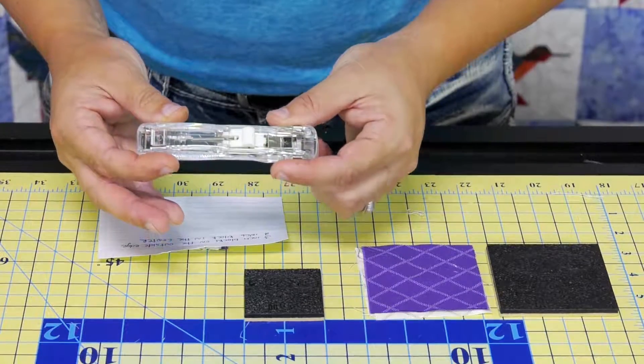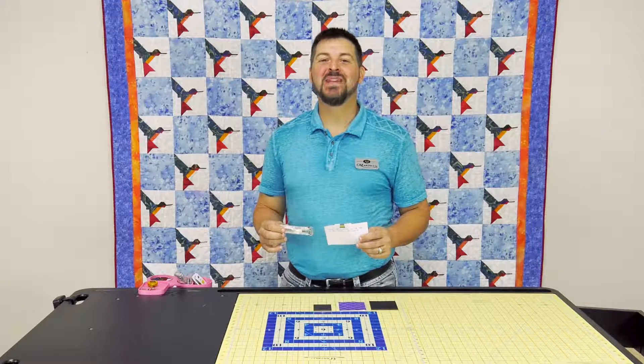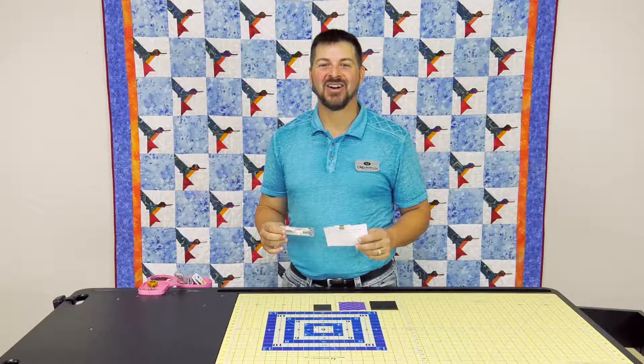So whether you're talking about holding your edges down in your binding or safety, this is the ultimate tool. Go now and get your medium zip gun at martellinotions.com.